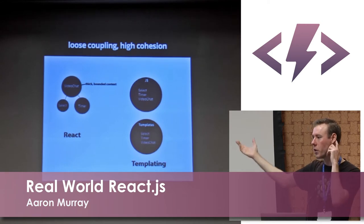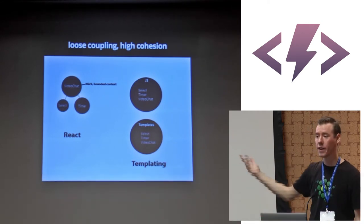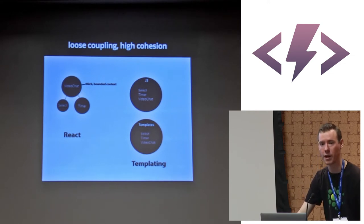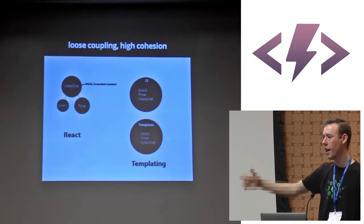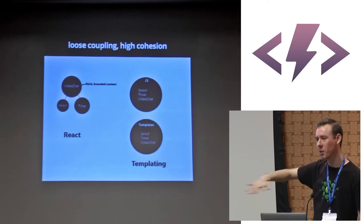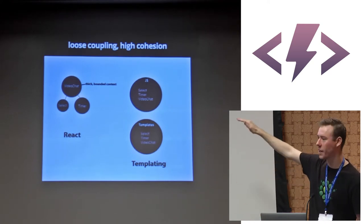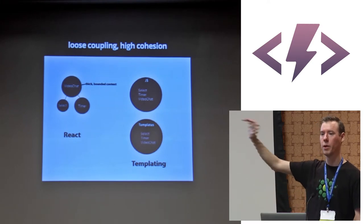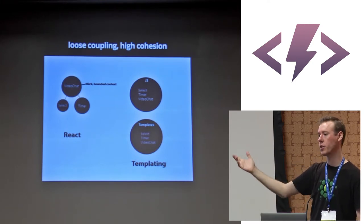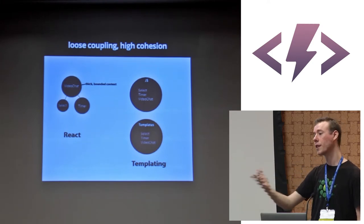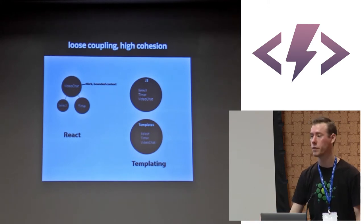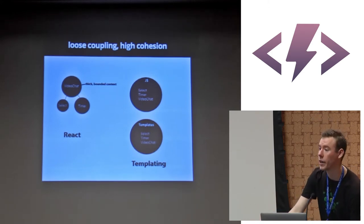I find this really cumbersome going back to an old Backbone and Marionette project — my templates are in the templates folder, I've got to dig in to open the video chat component template, then go open the view. These things are separated by type, so they're loosely coupled but not cohesive.